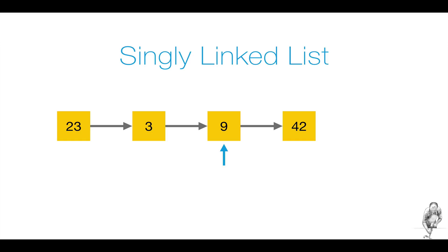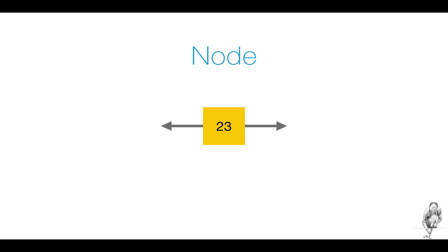Removing an element from a singly linked list has the same issue — it is possible, but generally not very efficient. These operations get much easier when you add a second link to each node pointing to the previous element. This way you can navigate in both directions of the list. However, the extra link comes at a cost of extra memory as well as time to build the more complex structure. Whether this overhead is justified will differ for each use case.